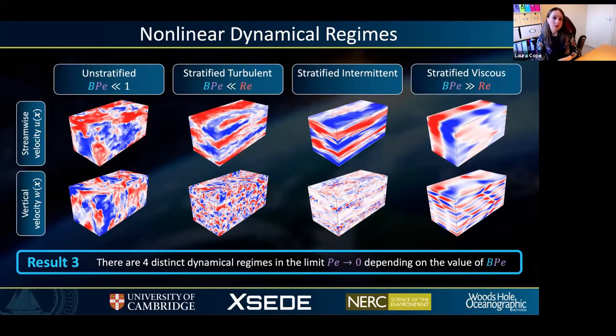So what happens next depends on the parameters. Once the system reaches an equilibrium, we observe at least four different dynamical regimes that depend on the value of BPe for a given Reynolds number. These are illustrated on this slide using snapshots of the streamwise velocity field U along the top of the slide and the vertical velocity field W along the bottom.